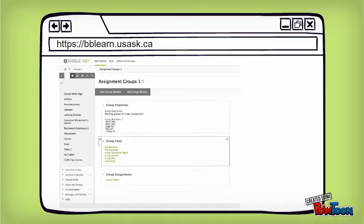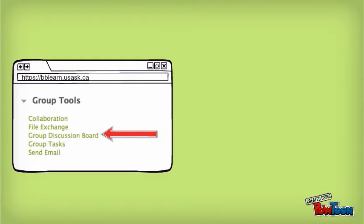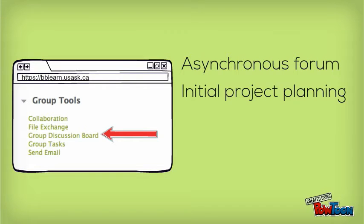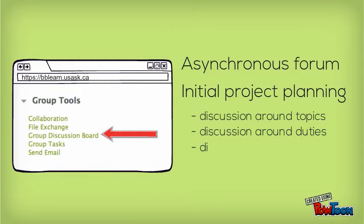Here you'll find a number of useful apps for getting the job done. First, look at the group discussion board. Just like class discussions, this is an asynchronous forum, but this time it's just for the members in your group. This is a great tool for early planning and decision making, but without electronic notification features you'll want to check back often to make sure you're not missing the conversation.